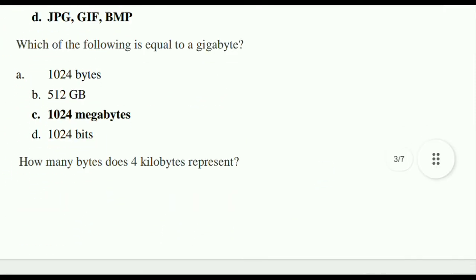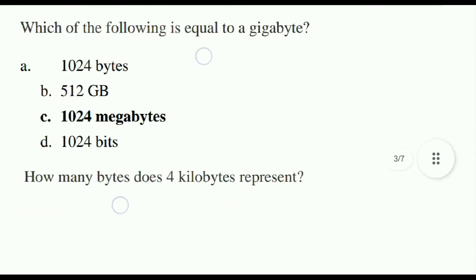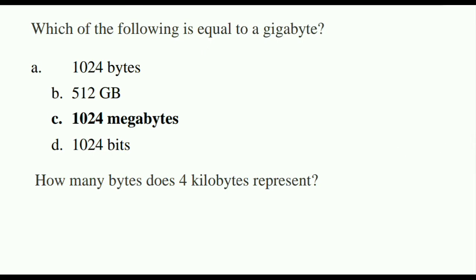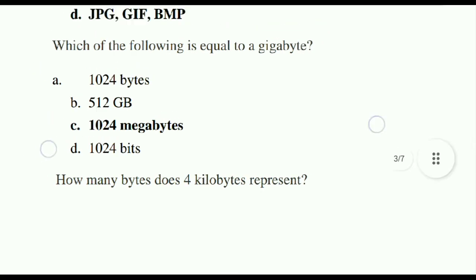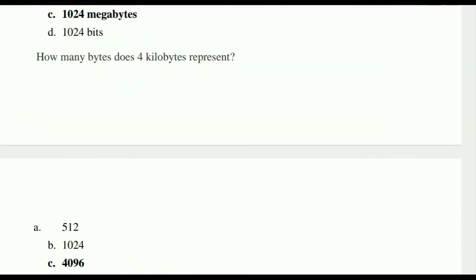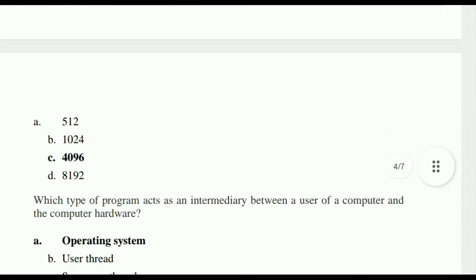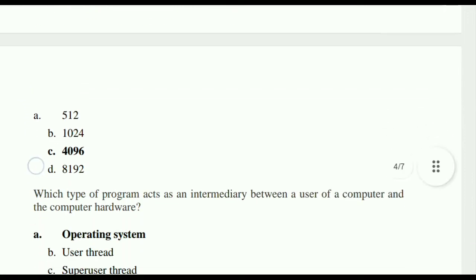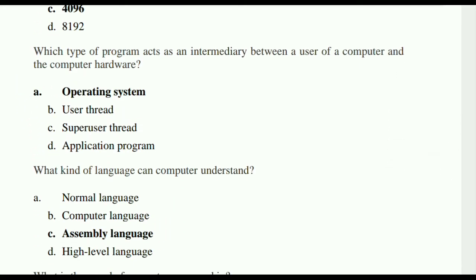Which of the following is equal to a gigabyte? That is 1024 megabytes. How many bytes does 4 kilobytes represent? That is equal to 4096 bytes. Which type of program acts as an intermediary between a user of a computer and the computer hardware? That is the operating system.